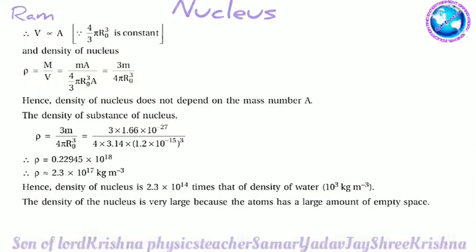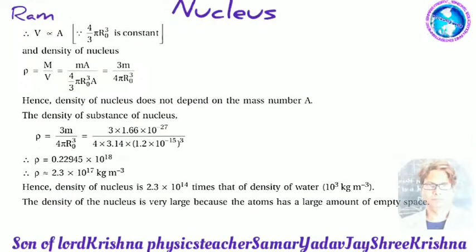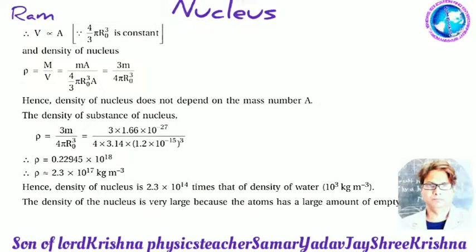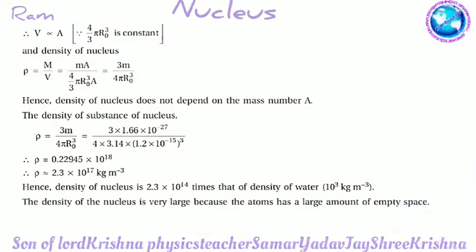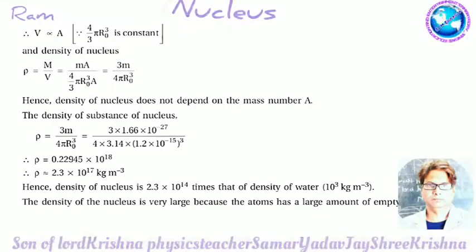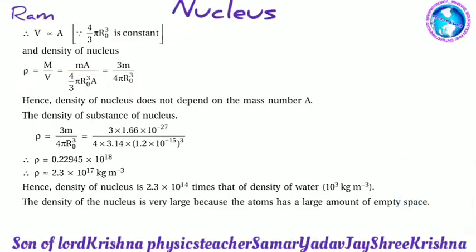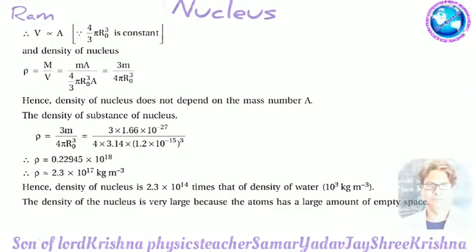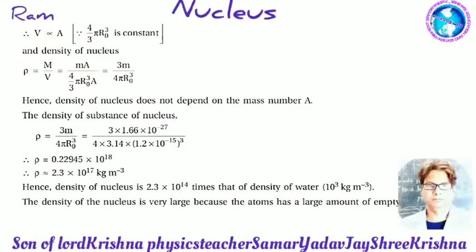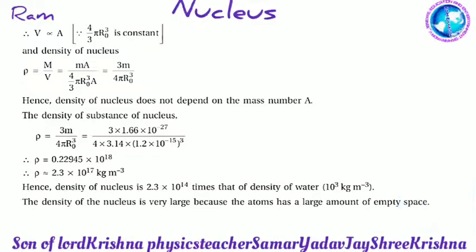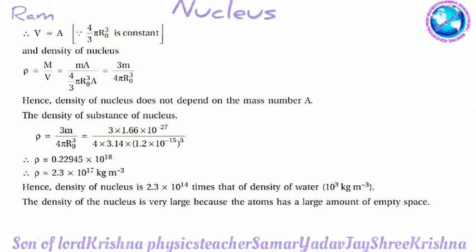The density of the nucleus ρ = 3m / (4πR₀³) = [3 × 1.66 × 10⁻²⁷] / [4 × 3.14 × (1.2 × 10⁻¹⁵)³]. Therefore ρ = 0.22945 × 10¹⁸ = 2.3 × 10¹⁷ kg/m³. Hence the density of the nucleus is 2.3 × 10¹⁴ times that of water (10³ kg/m³).